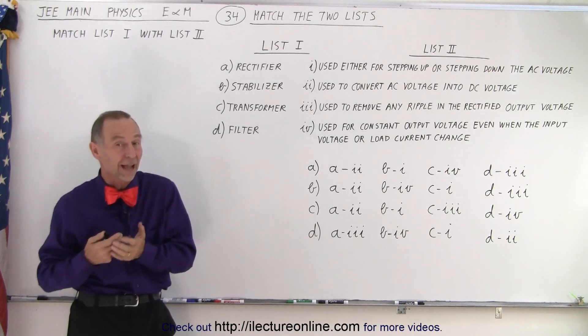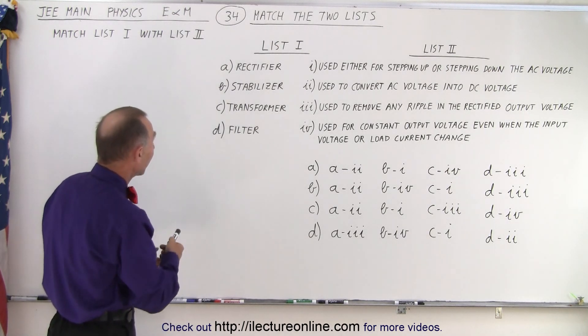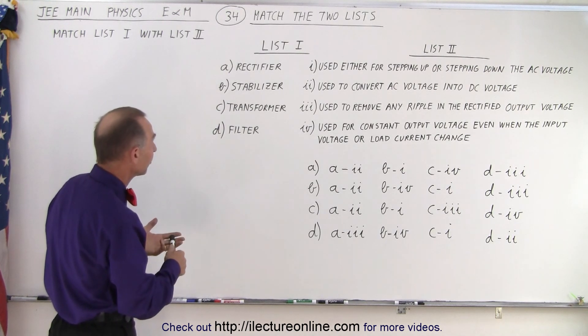Let's read the list and see how we can do that. So the first list has rectifier, stabilizer, transformer, and filter.